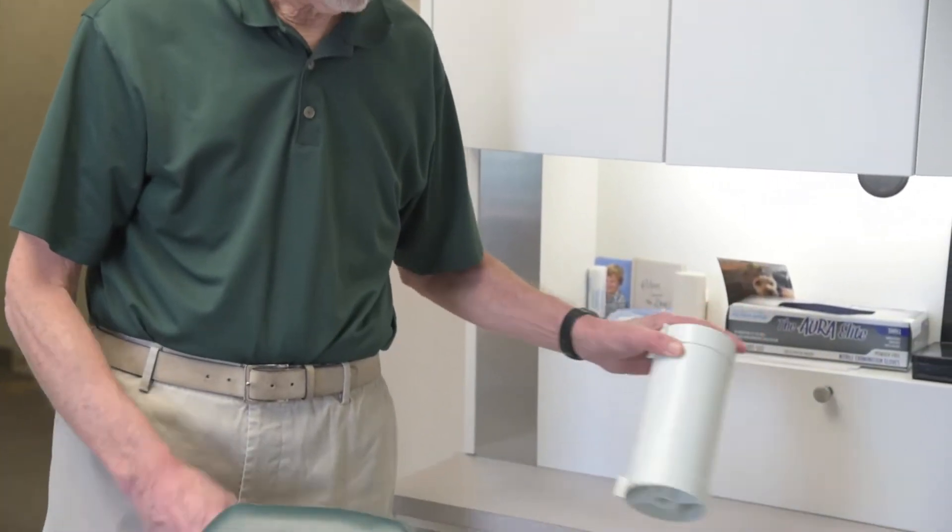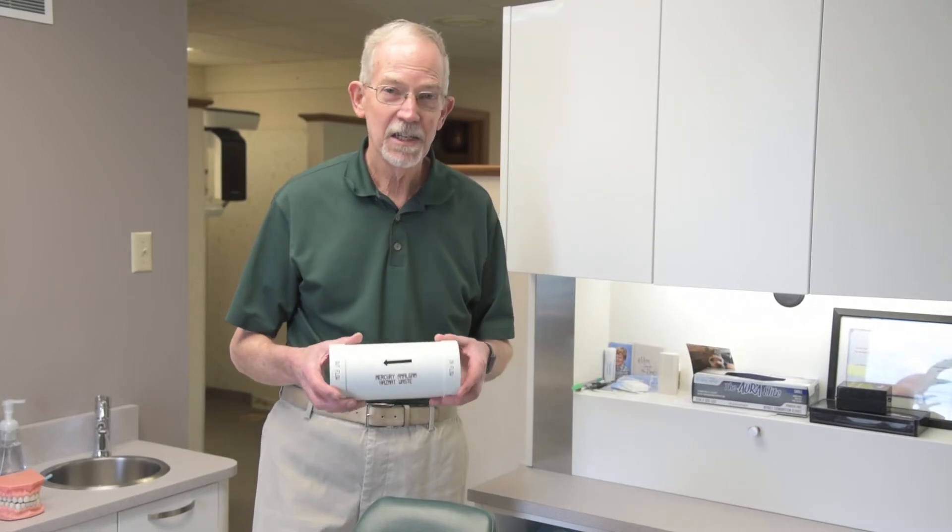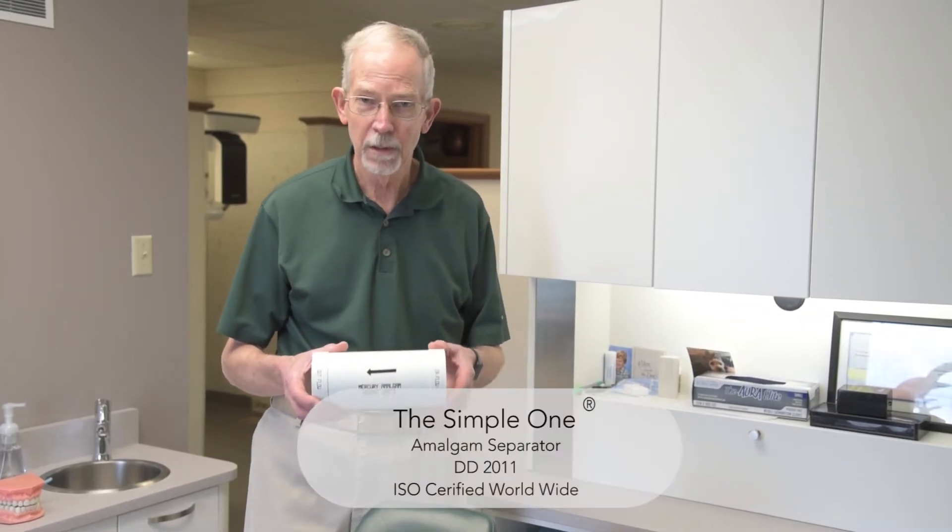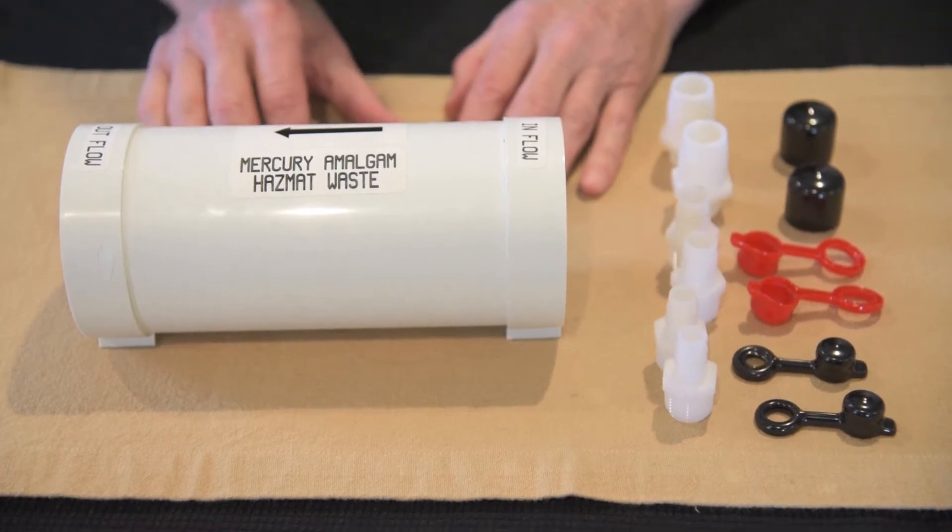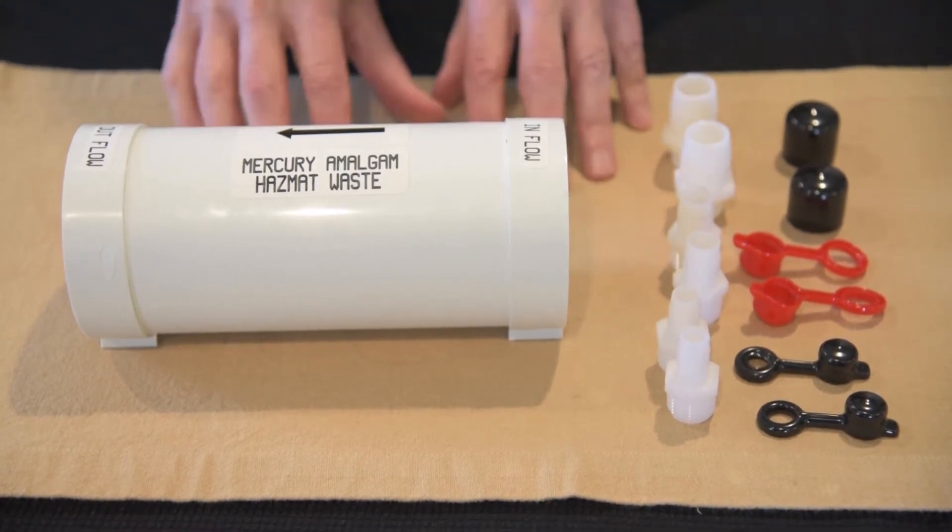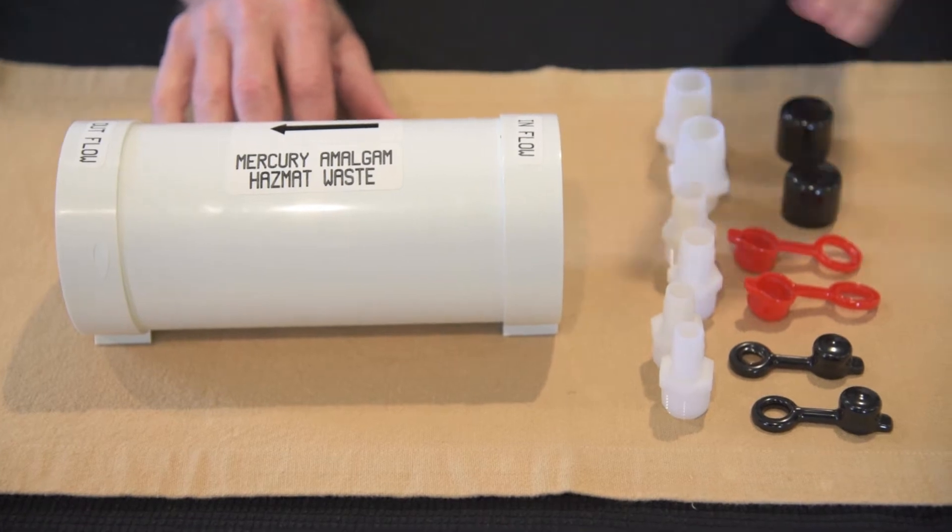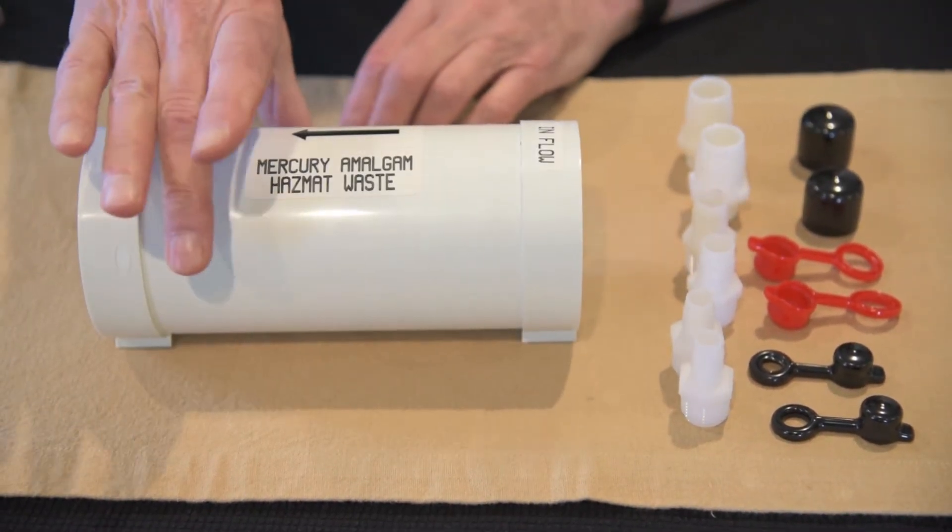The filter we're going to be using here is very easy to install, and it's called the Simple One. I'm going to show you the contents of the package, the parts that you receive when you open up the mercury filter box.